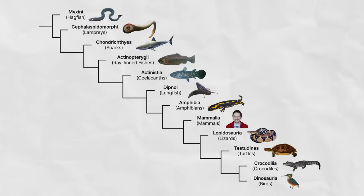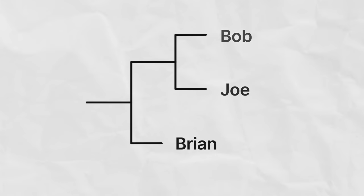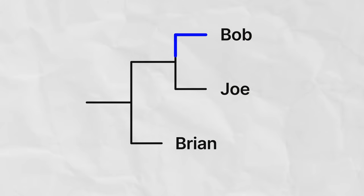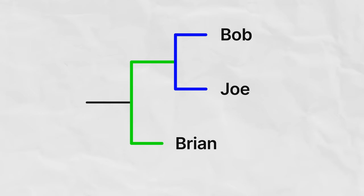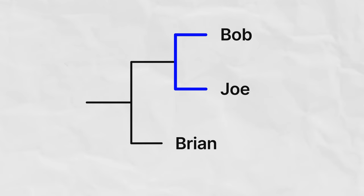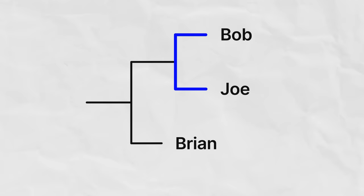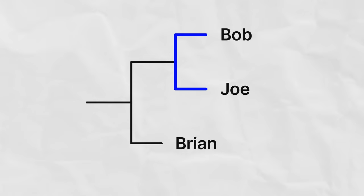This tree shows the relationships between three people: Bob, Joe, and Brian. As you may be able to see, Bob and Joe are more closely related to one another than they are to Brian. This would be the case if, for example, Bob and Joe are brothers and Brian is their cousin. Bob and Joe share parents, not just grandparents, with one another. Because they share more recent common ancestors with one another than they do with Brian, they are more closely related, even though they do share ancestors with Brian.